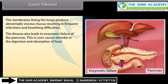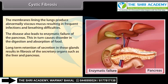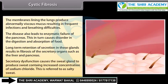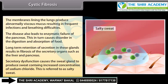Cystic fibrosis also leads to enzymatic failure of the pancreas, causing disorder in the digestion and absorption of food. Long-term retention of secretions results in fibrosis of the secretory organs such as the liver and pancreas. Secretory dysfunction causes the sweat glands to produce sweat with increased concentration of sodium chloride, referred to as salty sweat.